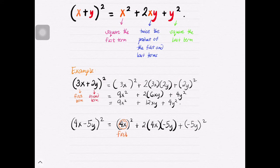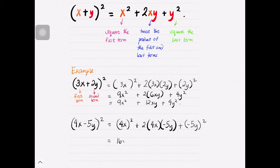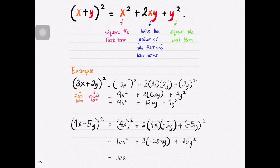Let's simplify these expressions. The square of 4x is 16x², plus 2 times the product of 4x and negative 5y, which is negative 20xy, plus the square of negative 5y, which is 25y². Simplifying the middle term, we'll have 16x² − 40xy + 25y².